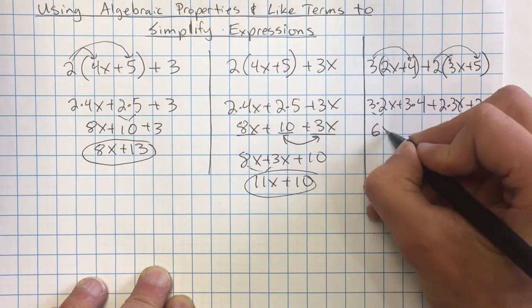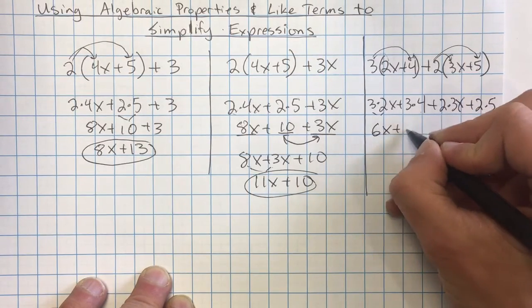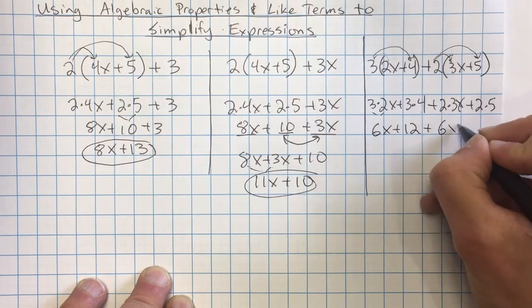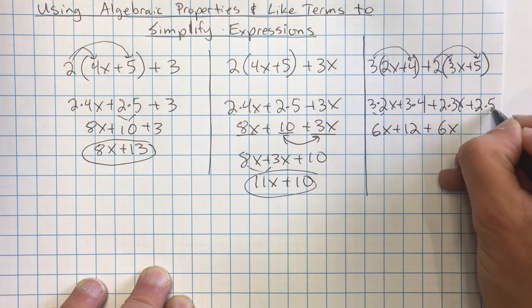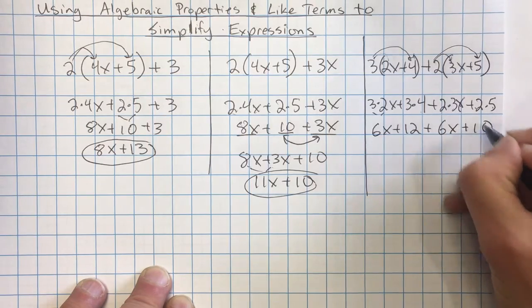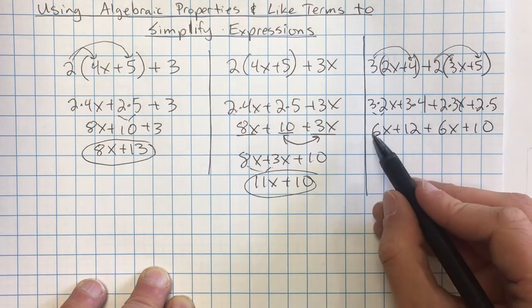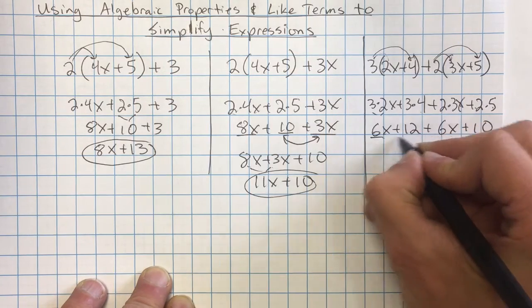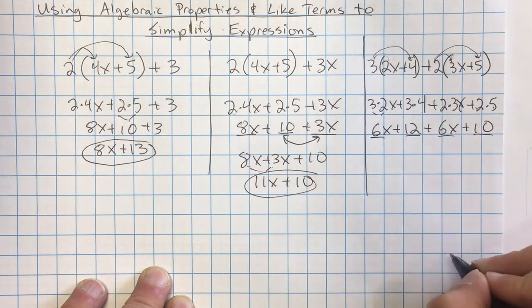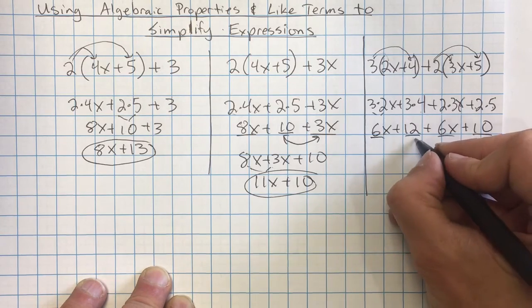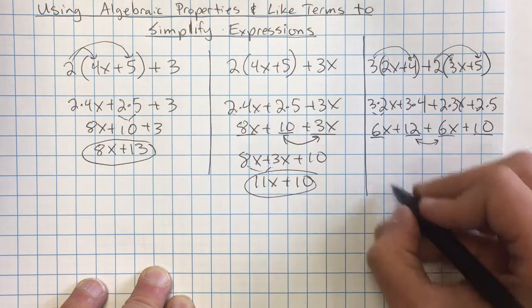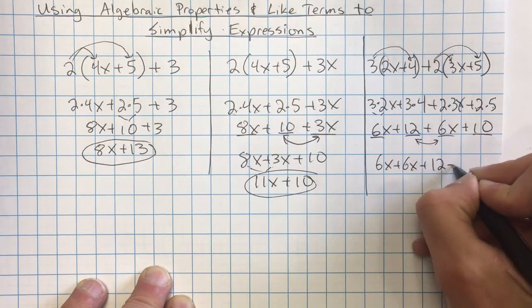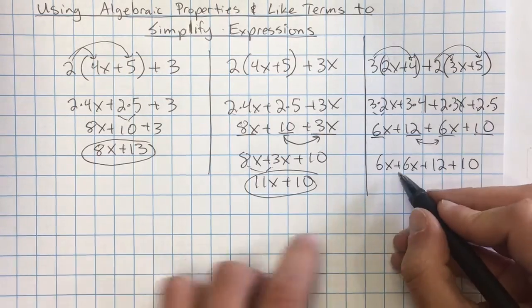I get 6x here plus 3 times 4 is 12 plus 2 times 3x is another 6x plus 2 times 5 gives me 10. So now I'm going to combine the like terms. Now I can use the commutative property because I have four things I'm adding together. I can change the order. So I'm going to switch the places of these. And that gives me 6x plus 6x plus 12 plus 10.